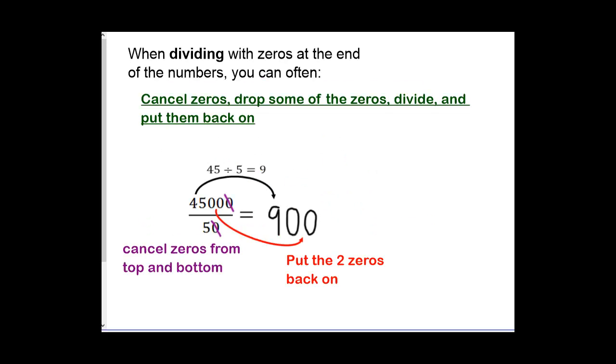When dividing with zeros on the end, we can use the following. Cancel zeros, drop some of the zeros, divide, and put the zeros back on.